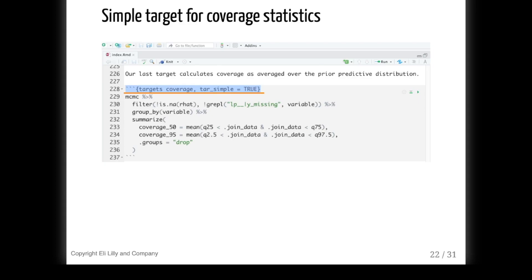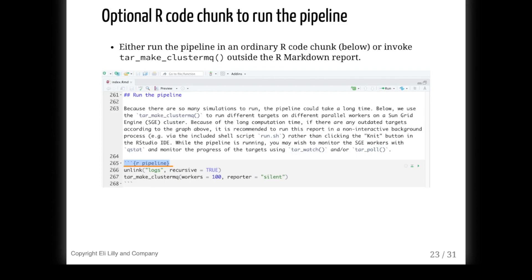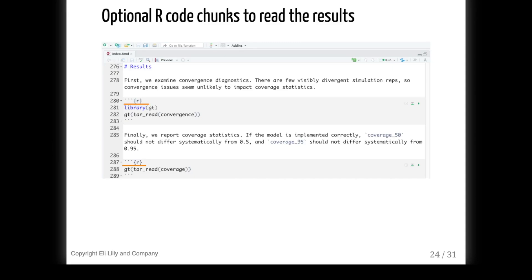When we run this report from end to end, the script files get written, and this report returns quickly. We then have the option of running the pipeline using the tar_make function or similar, either inside or outside this report. In this example, we run the pipeline in the same report that defines the pipeline. We don't have to, but it's very often convenient. We write an ordinary R code chunk right after all the target code chunks, so we're not using the targets language engine anymore, and we call the tar_make_clustermq function to distribute our simulations across 100 workers on a computing cluster. It's also nice to have R code chunks to read results from the targets data store and display them after the pipeline is finished running.